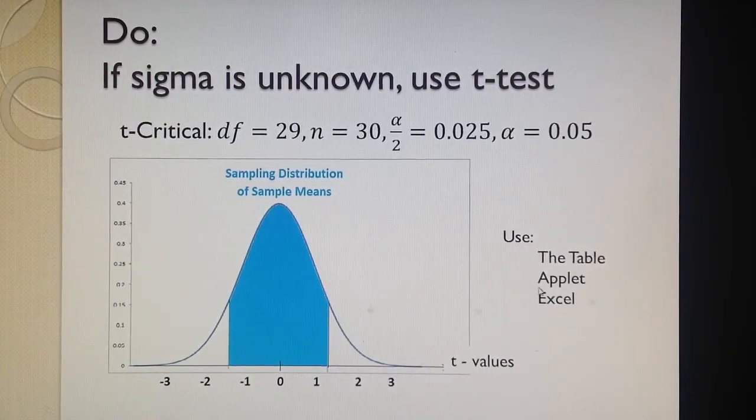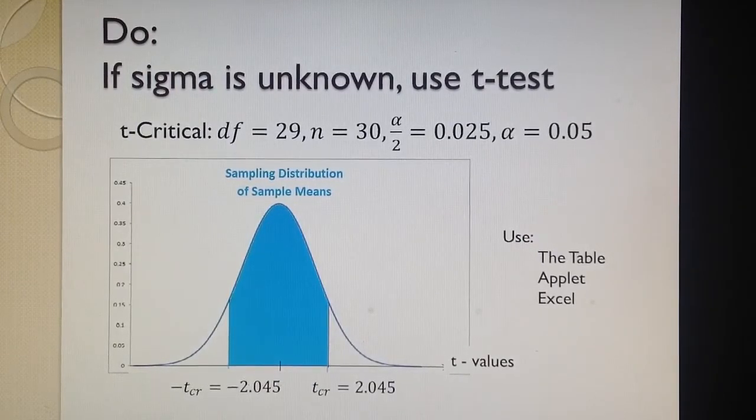I will calculate degree of freedom and level of significance, may be the same, will use the Applet, Excel, or the table, and will calculate the T critical value. This is the critical value that is on the boundary between the area of acceptance, the blue area of null hypothesis...